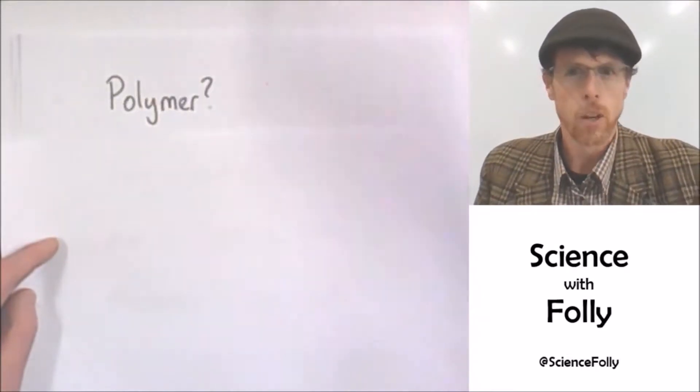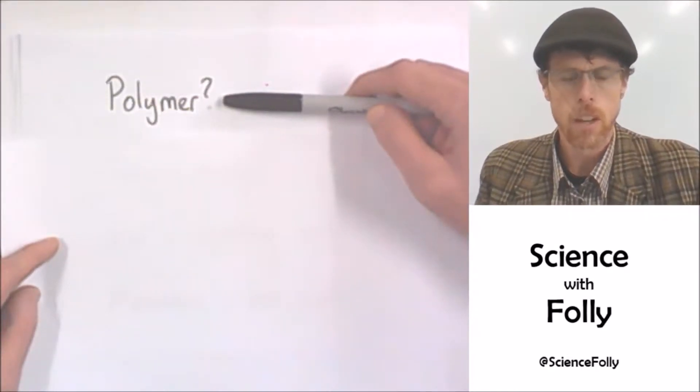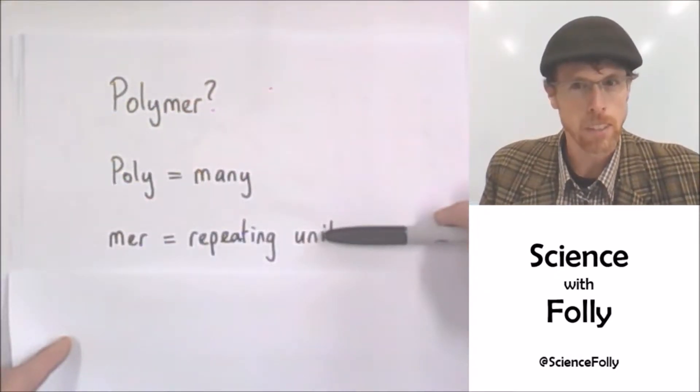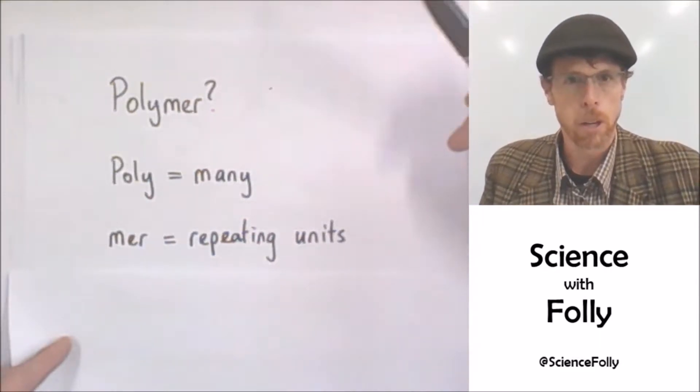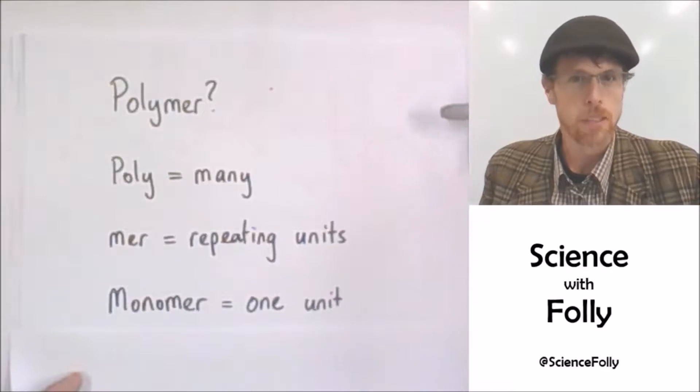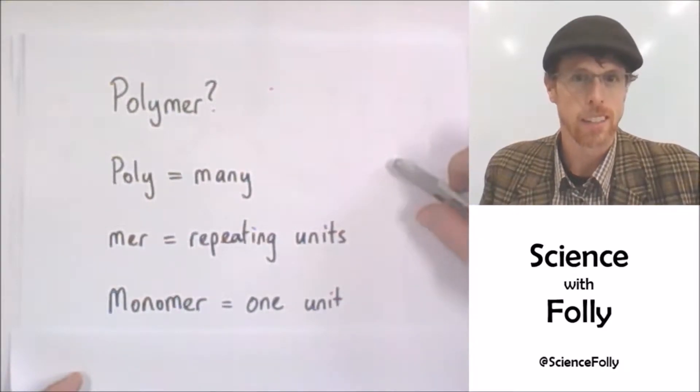So firstly, what is a polymer and what does polymer mean? Well, poly means many and mer means repeating units. So polymer just means a whole lot of repeating units, and polymers are made up of monomers, which are one unit. And in this case, the units we are looking at are going to be alkenes.